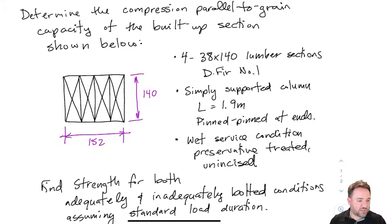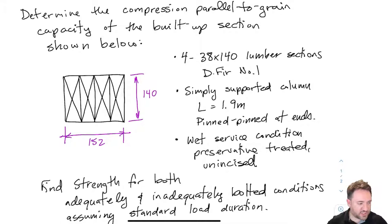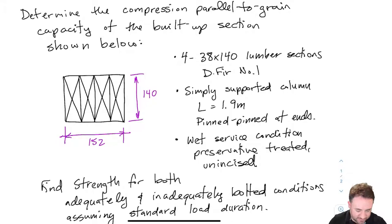We are assuming this column is 1.9 meters long — so not very long — pinned at both ends, so we have a pin at the bottom and a pin at the top. That gives us simple-simple support; it's going to bend in a k equals one type of buckling shape. It has a wet service condition and is preservative treated, unincised. We're going to compare the strength of this column if we treat it as a built-up section versus four individual members sitting in the same place.